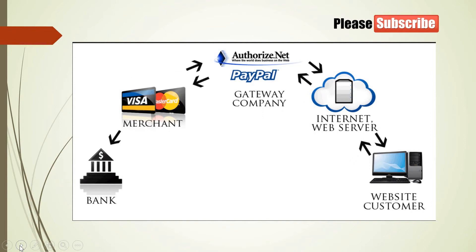This is how the process works — it involves the bank, merchant, authorization network, gateway company, internet web server, and website customer. It's an interchanging process. The bank gives you the card — Visa or Mastercard — which works with the payment gateway. With the internet web server, your website customer interacts and the payment gateway is integrated. There are two ways of setting this up.